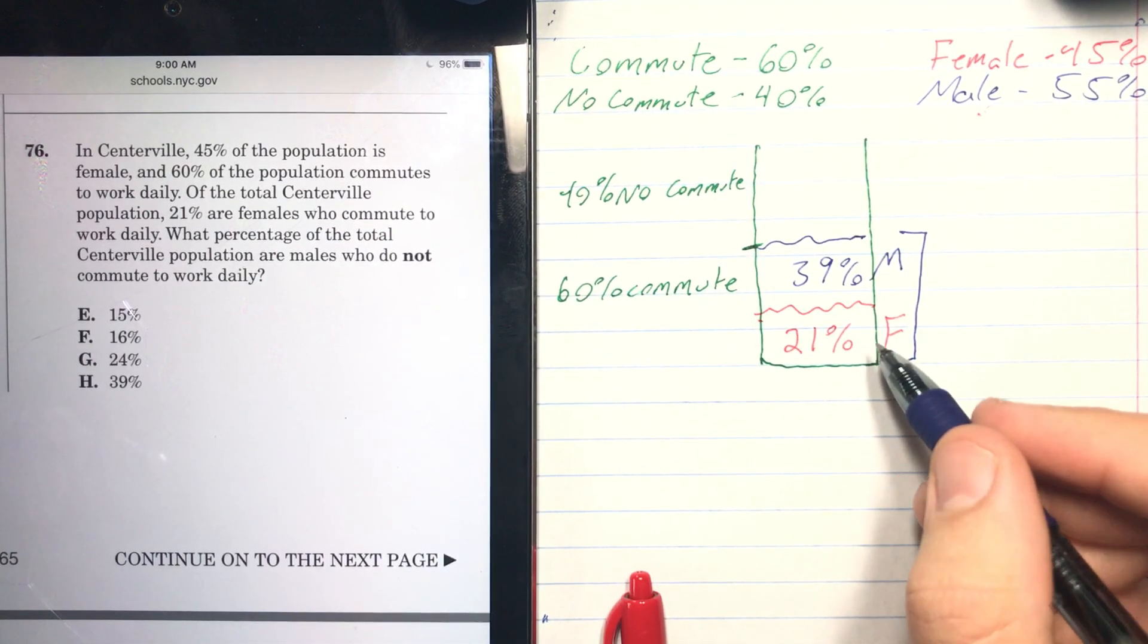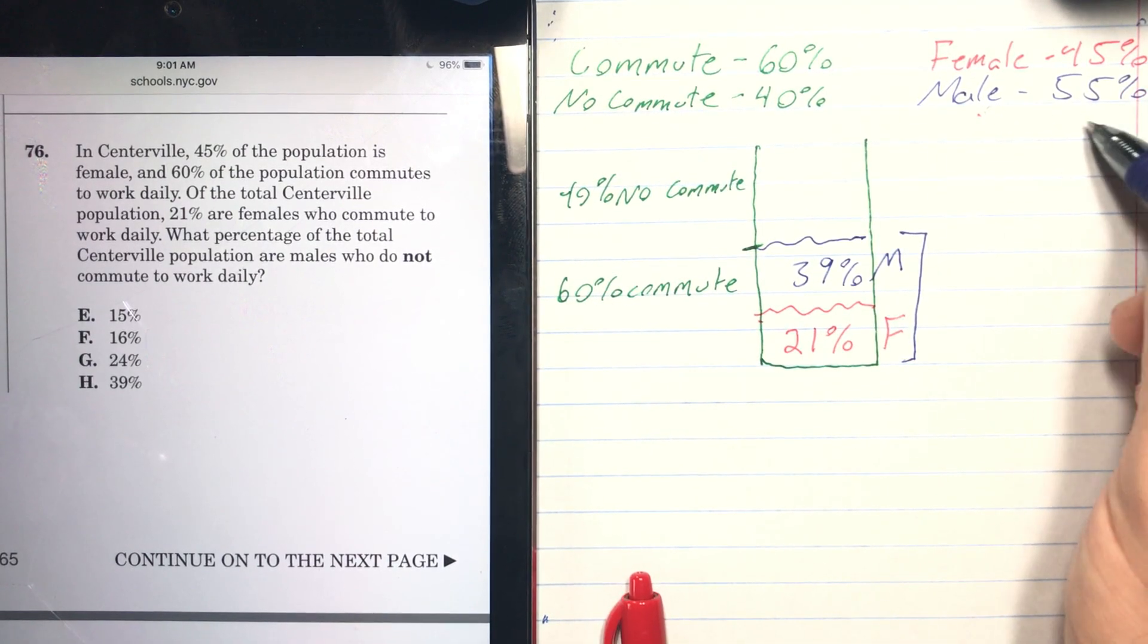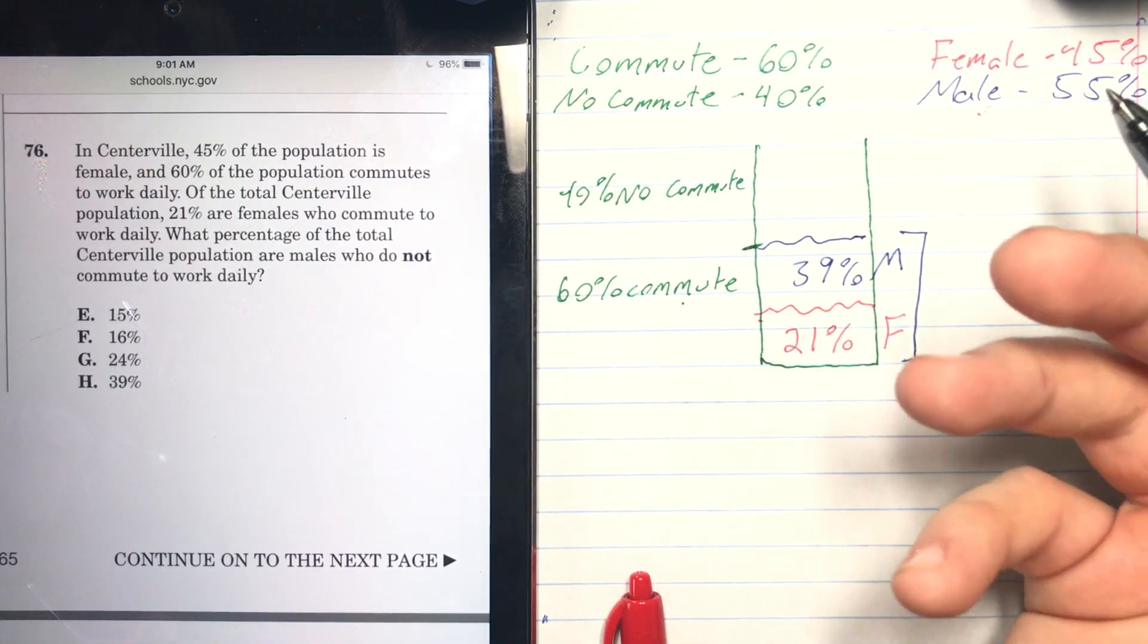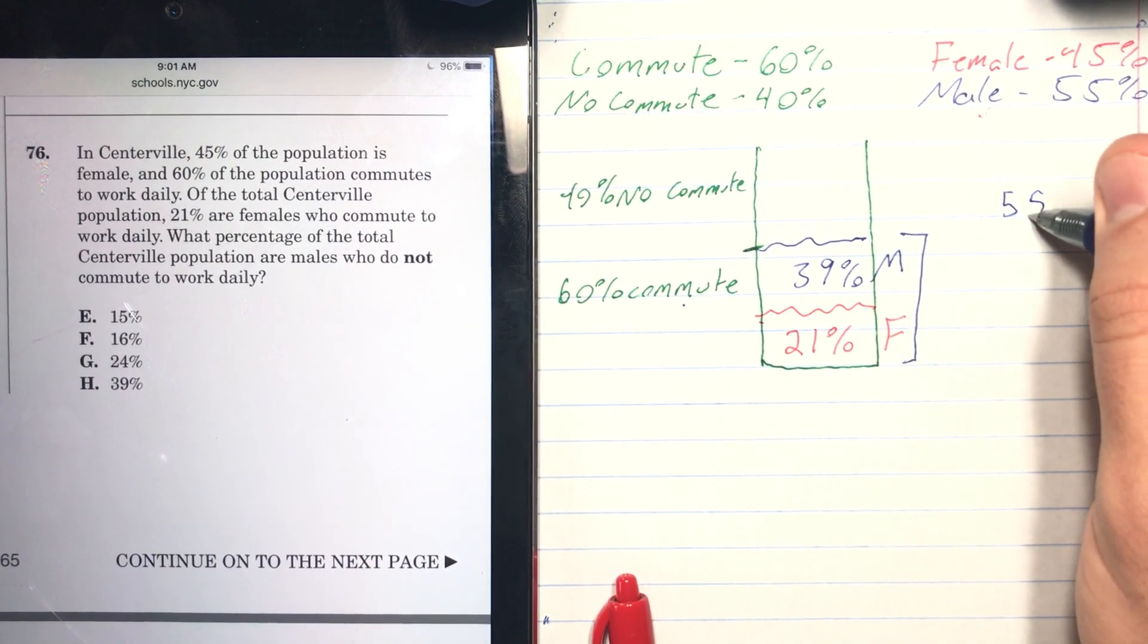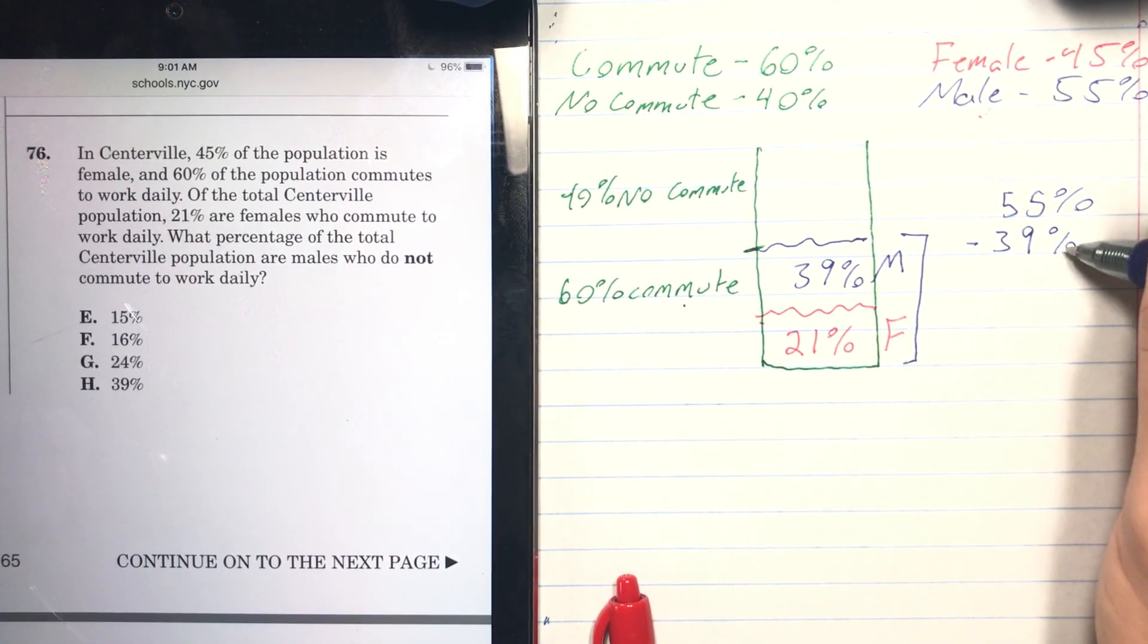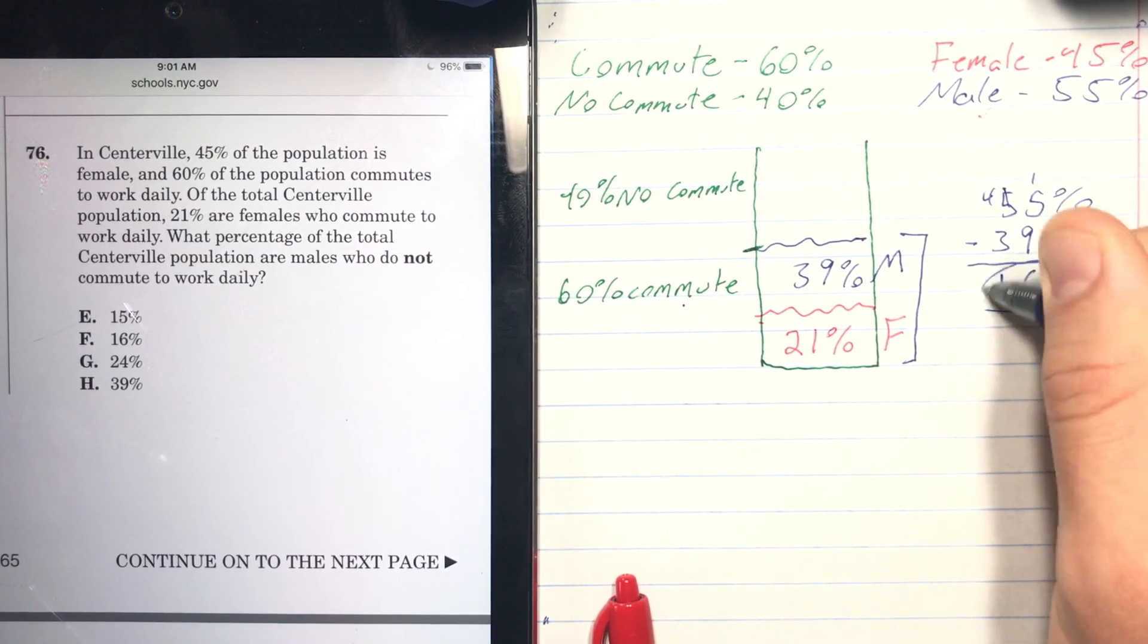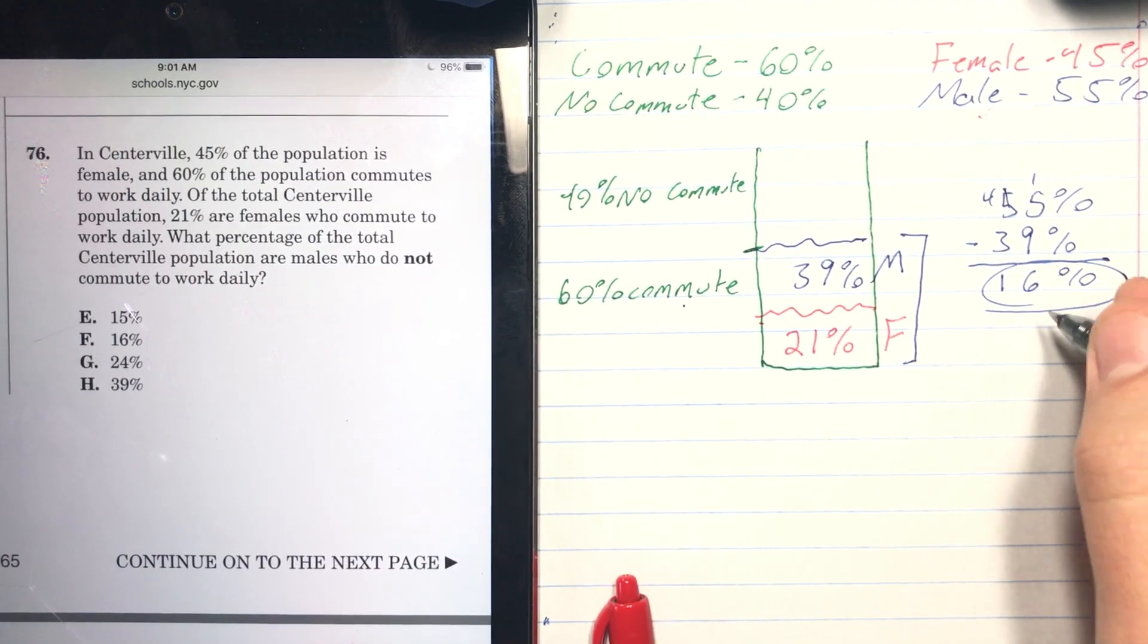So 55% of the population is men. 39% of that population commutes to work. So what's left of the male population? Well, we take our 55%, we subtract the amount of men that commute, and we are left with 16%. So that's our answer right there: F.